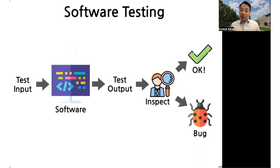Traditionally, the way to do this is through what's called software testing. The developers of the system first create the software they would like to deploy, and then manually come up with a set of test cases or test inputs. For each input, they run it through the software and inspect the output to make sure it is as expected. If the output is different from what the developers expected, this could suggest that there is a bug in the software that needs to be fixed.